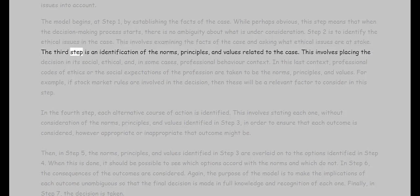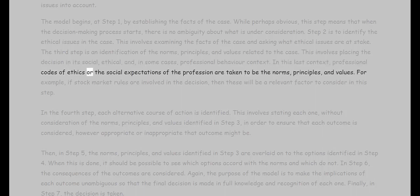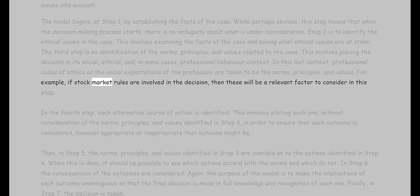The third step is an identification of the norms, principles, and values related to the case. This involves placing the decision in its social, ethical, and, in some cases, professional behavior context. In this last context, professional codes of ethics or the social expectations of the profession are taken to be the norms, principles, and values. For example, if stock market rules are involved in the decision, then these will be a relevant factor to consider in this step.